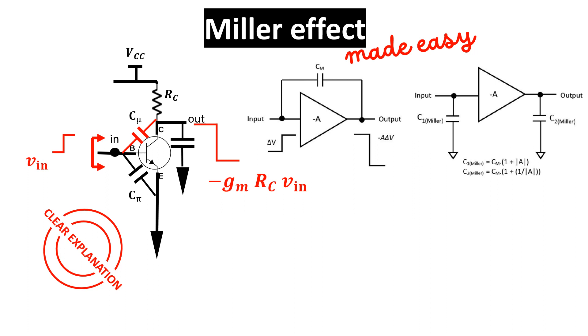We see an example of Miller effect in the common emitter configuration, and we see also why the cascade configuration improves the bandwidth. Ultimately, we see the Miller theorem from which the Miller effect derives.